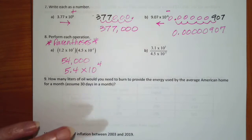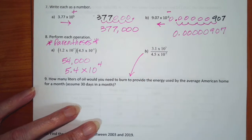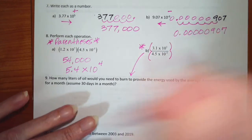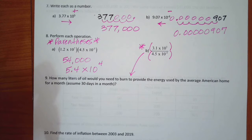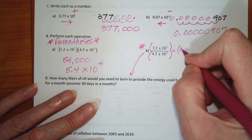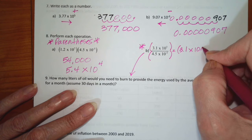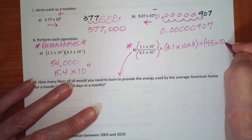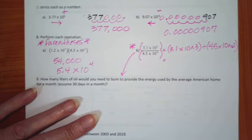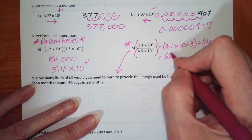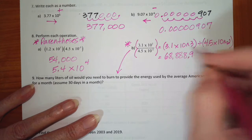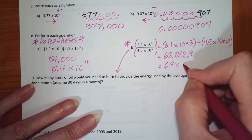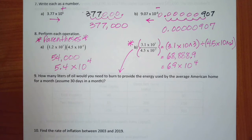This is the one we really need to pay attention to because it's what we'll need for energy conversions. The important thing here is the parentheses — your calculator knows order of operations, so you must use them. Enter open parentheses 3.1 times 10 to the 3rd, close parentheses, divided by open parentheses 4.5 times 10 to the negative 2, close parentheses. In number mode you get 68,888.9 repeating; in scientific notation mode it gives you 6.9 times 10 to the 4th. Either is fine.